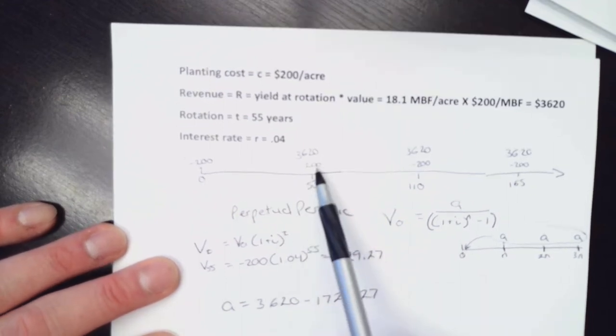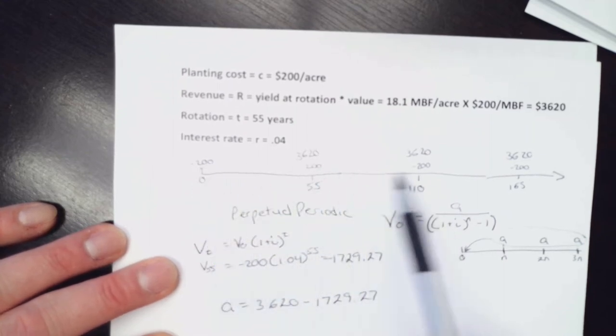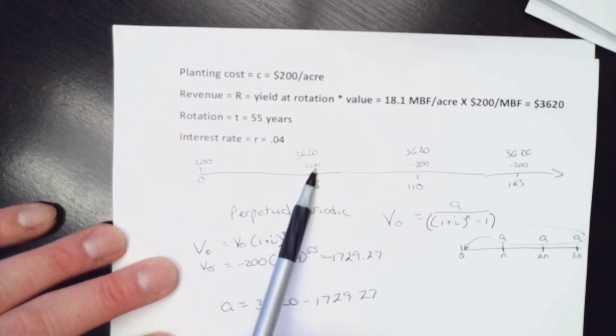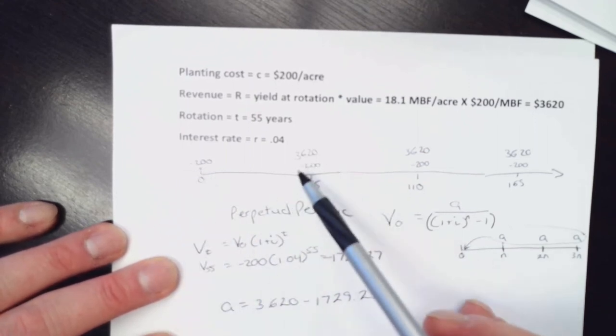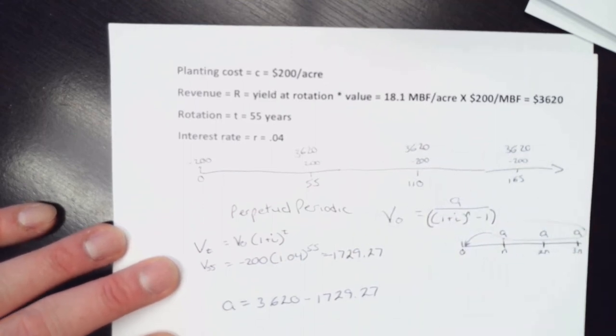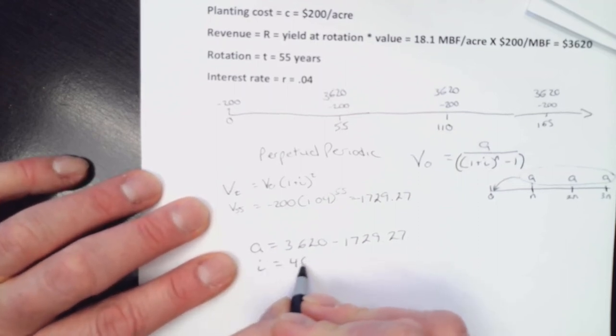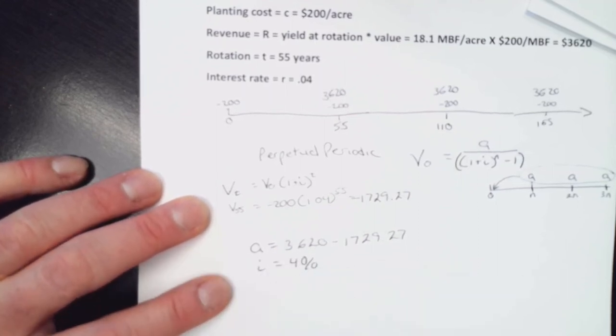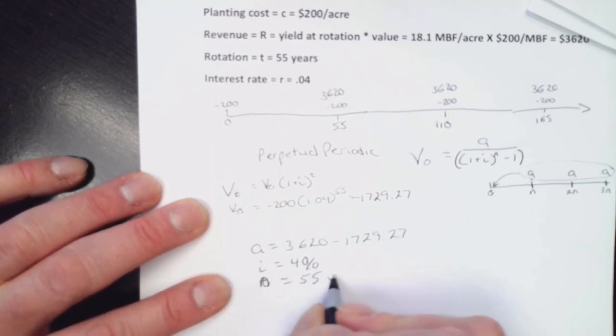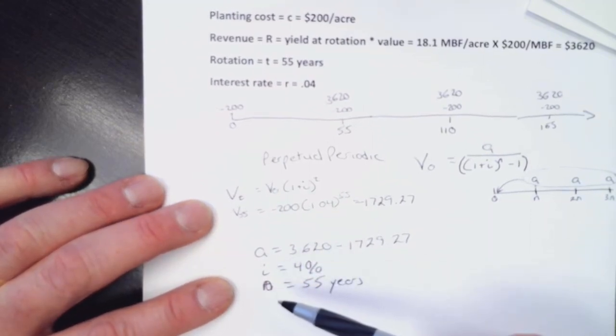So just quickly, why aren't we doing this $200 as well? Because that is in this series. So what we're looking at are these $200s. When I take the single value out here, it's the equivalent of having a $1,729, a $1,729, and a $1,729 here. So I've slid it out. So I have my A. I know what my i is. That's 4%. That's a big thing there. And that my N is going to be 55 years. So got my known values in here.